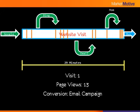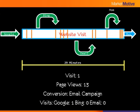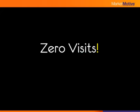What happens to the number of visits, since there were actually three different media touchpoints — Google, Bing, and email? In Google Analytics, you'll notice one visit credited to Google, zero visits credited to Bing, and zero visits credited to email. In fact, email will show zero visits and one conversion. The entire visit is counted as one, starting with Google, so that's where the visit gets credited. So indeed, the zero visits problem exists in Google Analytics and many other tools.